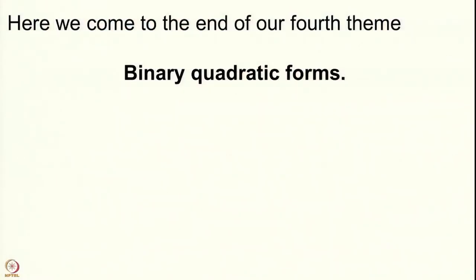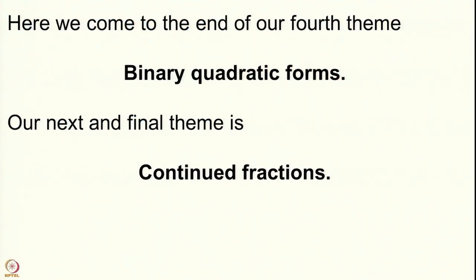We now come to the end of our fourth theme on binary quadratic forms and move to our last theme: continued fractions. What are continued fractions? Just as binary quadratic forms are homogeneous polynomials of degree 2 in 2 variables, continued fractions are fractions which are continued — but it is better to see an example. A continued fraction expansion has a dot-dot-dot at the end, meaning the fraction goes on toward infinity. These kinds of representations for a real number are called continued fraction expansions.